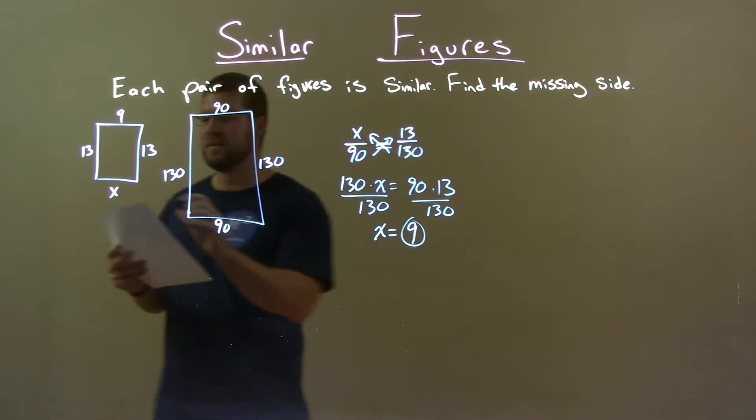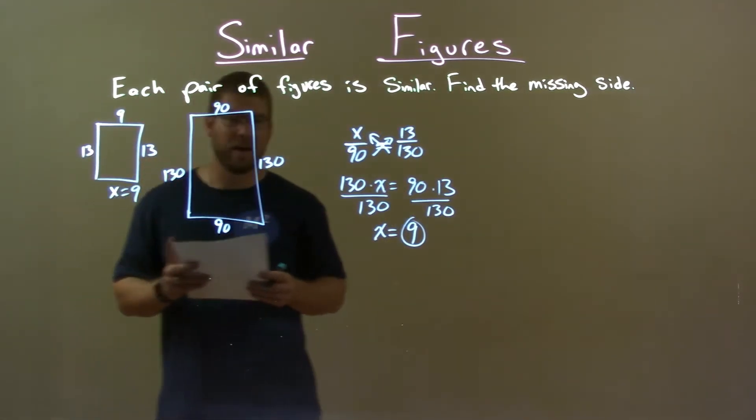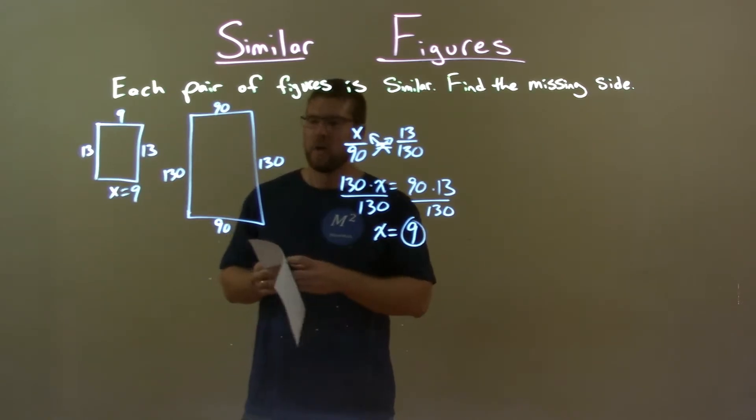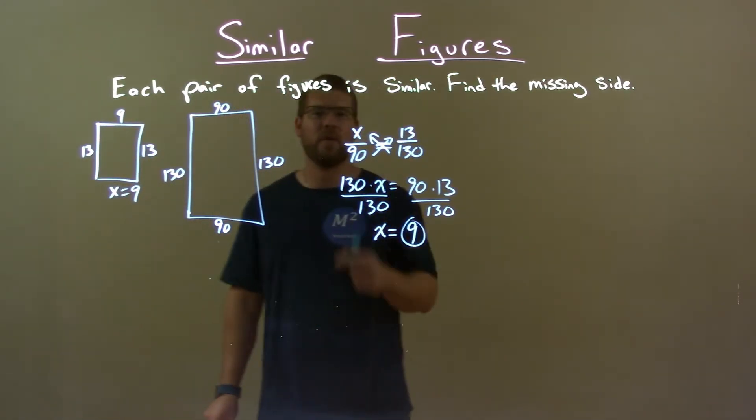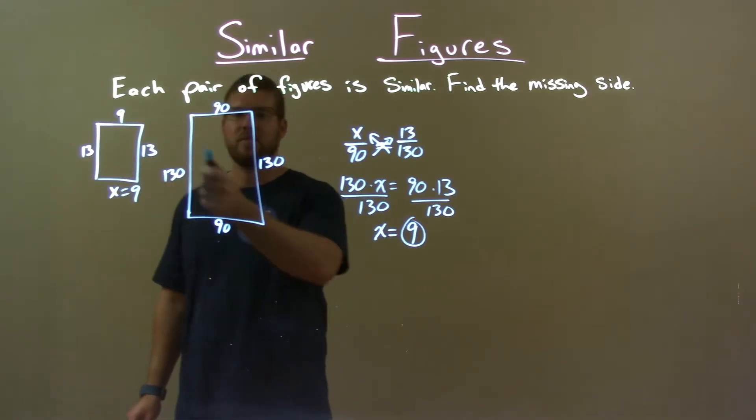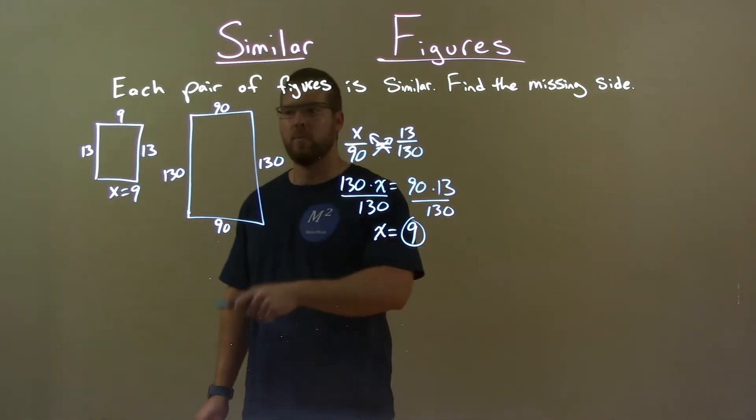And so that missing side length here is just 9. Quick recap: we're given two rectangles that are similar and we find the missing side length. Since they're similar, corresponding side lengths are proportional.